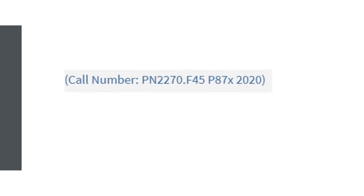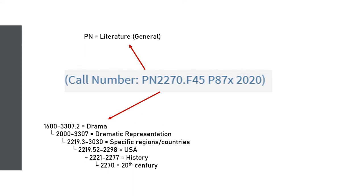The first letter or two in a call number correspond to the general subject area, in this case literature. Then a set of three or four numbers indicates a more specific slice of that subject area. This example is from the drama section, and more specifically 20th century American drama history.